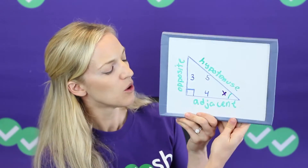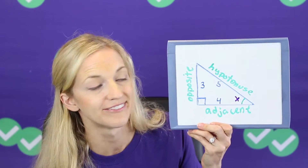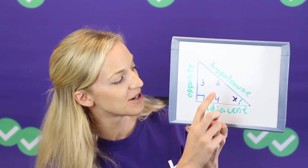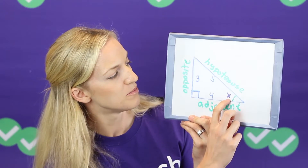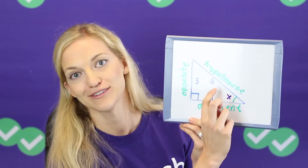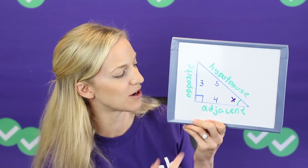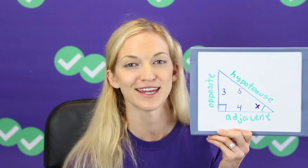Here are a few things you can do now that you know SOHCAHTOA. Going back to the 3-4-5 triangle: if asked for the sine of X, you know sine is opposite over hypotenuse, so sine of X = 3 over 5. If asked for the tangent of X, it's opposite over adjacent, so that's 3 over 4. Yes, there are questions on the ACT that are that simple.